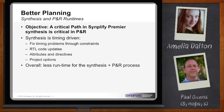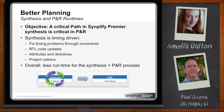You want to do things like RTL code updates, create attributes and directives for your design, and look at various project options when running synthesis. If your synthesis time takes about X hours, the place and route time can take, for example, 4X hours. You want to try to avoid this constant loop between synthesis and place and route by heading off problems during the synthesis portion.